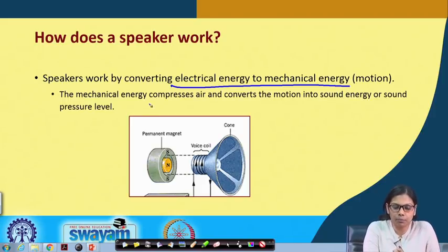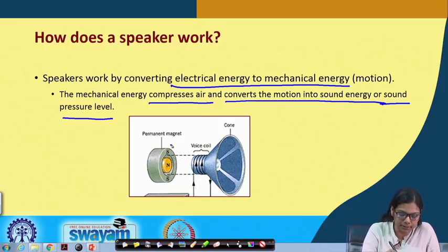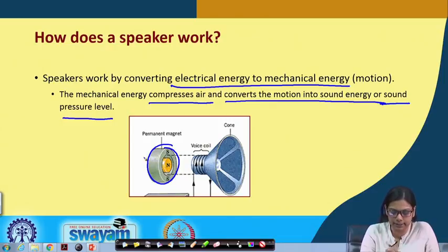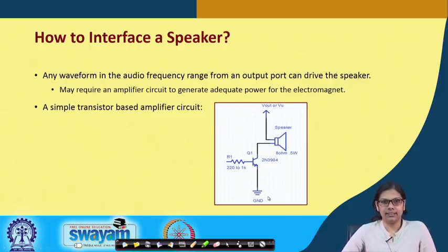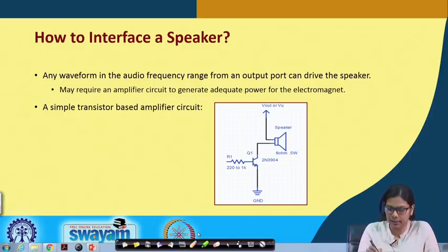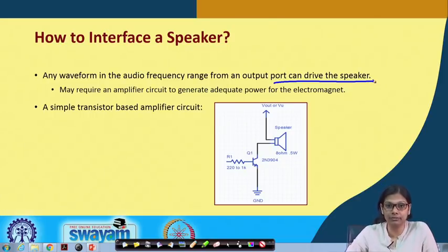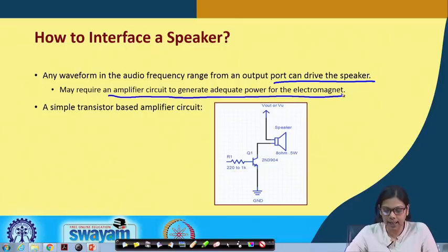The mechanical energy compresses the air and converts the motion into sound energy, or sound pressure level. Inside it there is a permanent magnet; some voltages are applied and then there is a coil through which it generates sound. Any waveform in an audio frequency range from an output port can basically drive the speaker, but sometimes we may require an amplifier circuit to generate adequate power for the electromagnet.